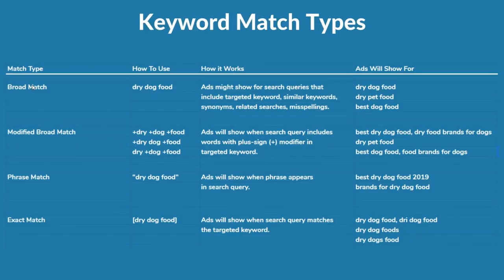The better way instead of using broad match keywords is to use modified broad match keywords. Ads will show when the search query includes words with a plus sign modifier in the targeted keyword. So we have +dry +dog +food with a plus sign in front of each word. If you have the plus sign in front of each individual word, then ads will show for something like best dry dog food or dry food brands for dogs — because we have dry, dogs, and food in there, it will show for those as well.